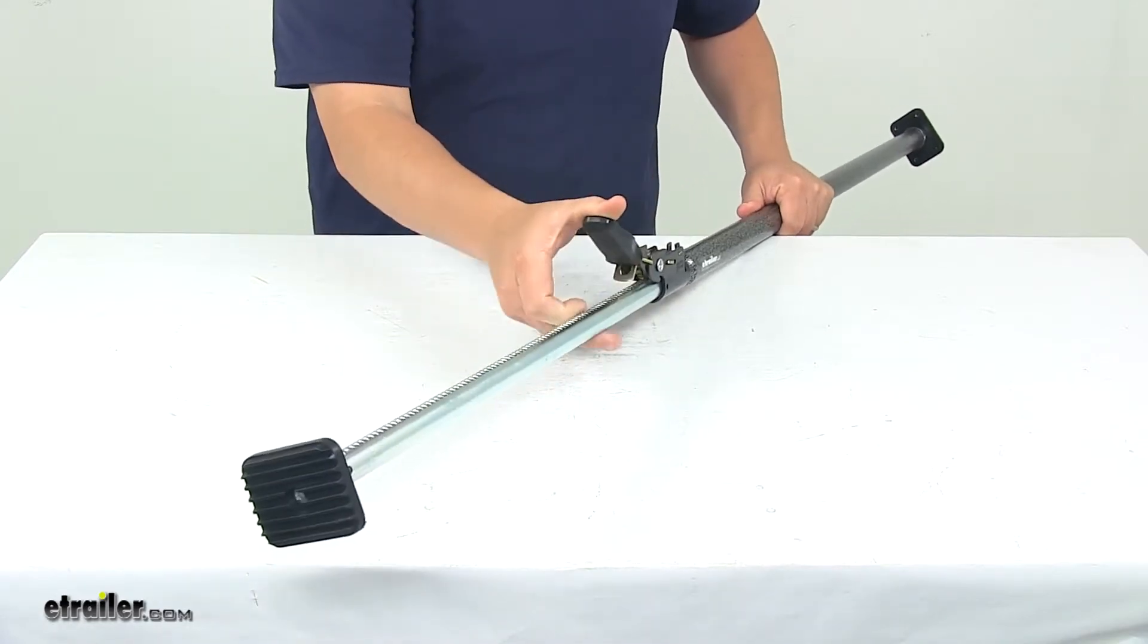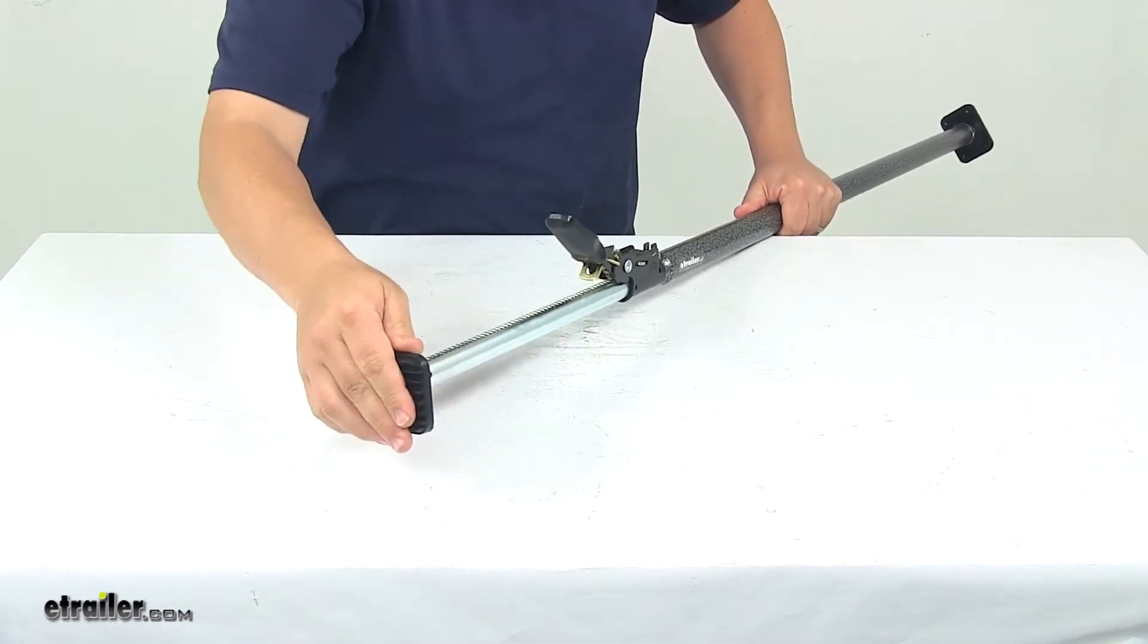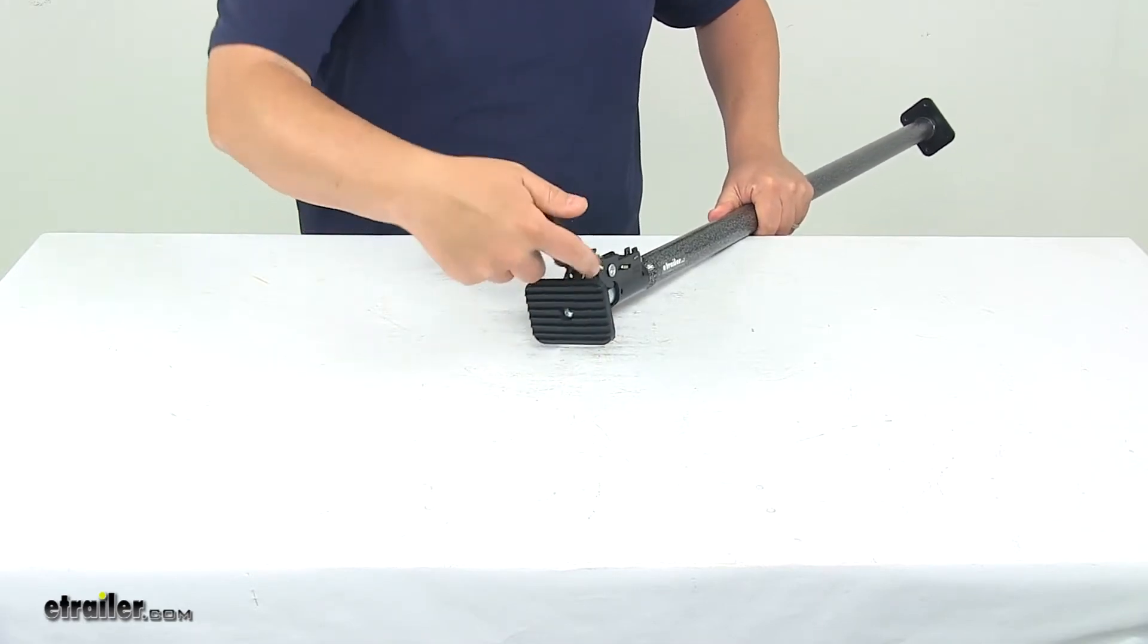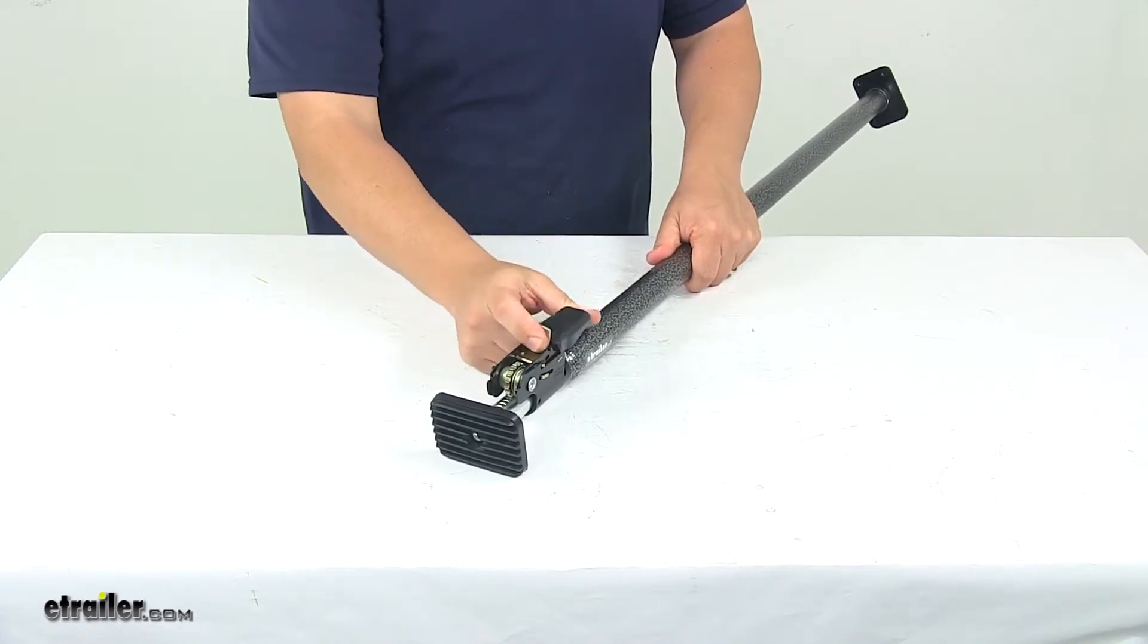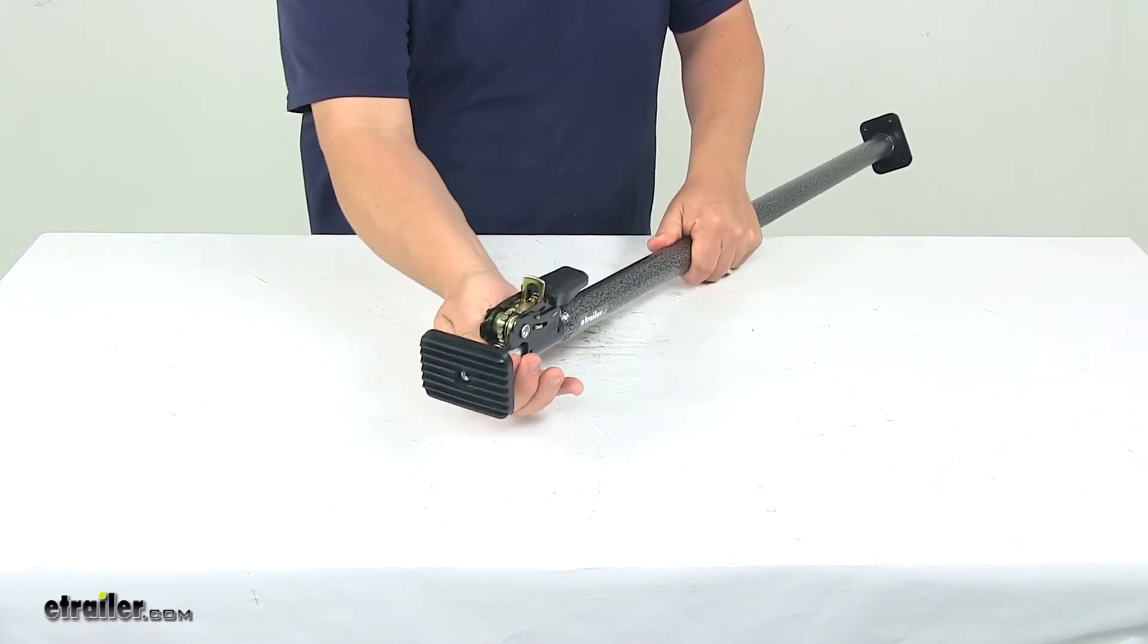To fully retract the unit, open it up all the way and basically push it back in. And then when you're ready to secure or lock the handle in position, push it all the way down. And that locks everything in place.